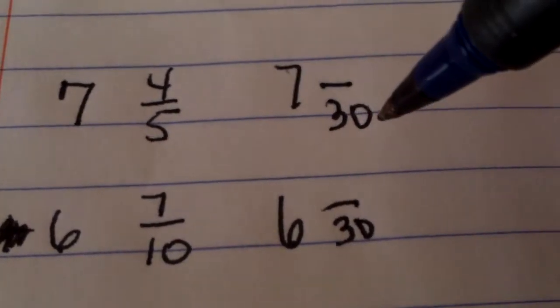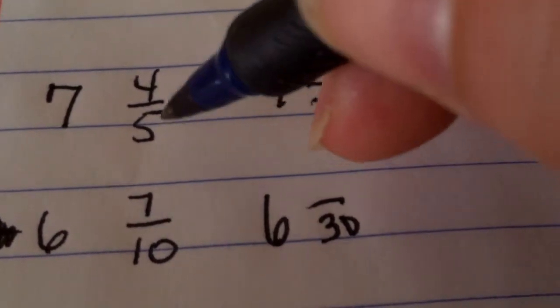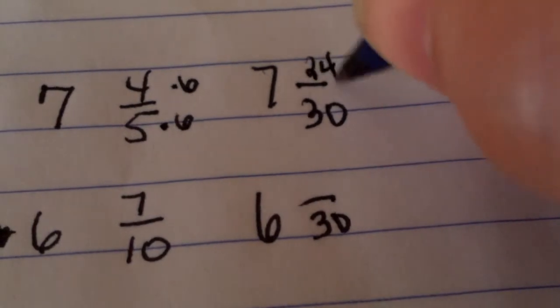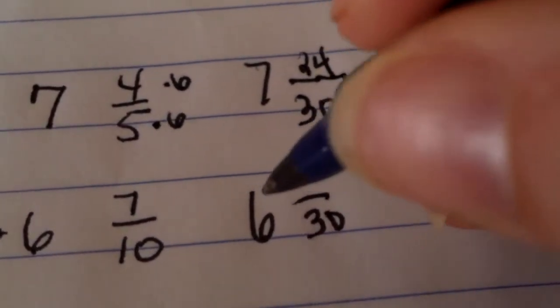Now, 5 goes into 30 six times. That's what we'd have to multiply by to get our new numerator. Don't reduce because I need to go back to your original, we need to have that in common.